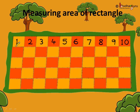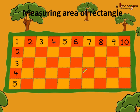First this row was filled with tiles — 1, 2, 3, 4, 5, 6, 7, 8, 9, 10. Ten tiles were required to fill a row. How many such rows are there? There are 1, 2, 3, 4, and 5. Five such rows are there. So, 5 rows with each row having 10 tiles — that is 5 times 10 tiles.